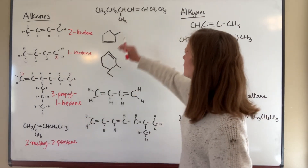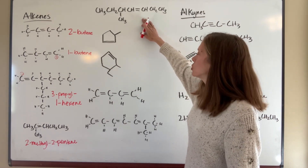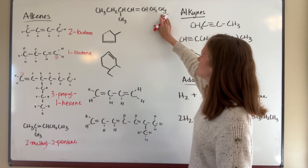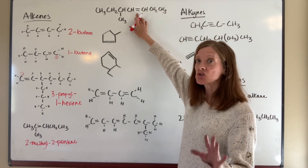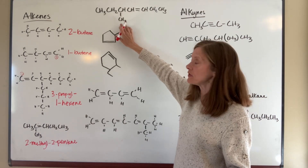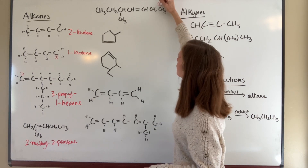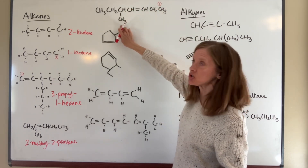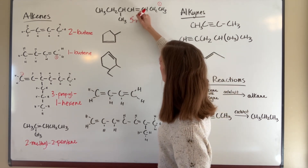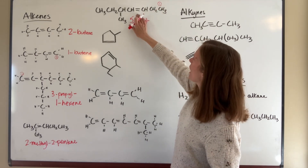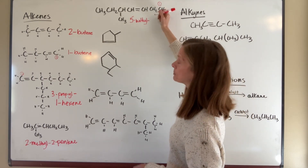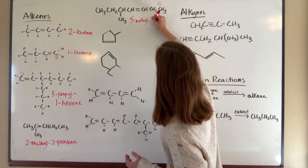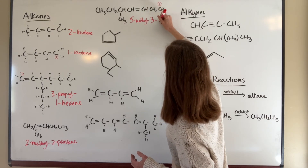In this example it appears there's a choice: start numbering from one end to give the methyl group the lowest number, or from the other end to give the double bond the lowest number. Since the double bond takes priority over alkyl groups, I must start numbering so the double bond gets the lower number. The substituent ends up on carbon five, and the double bond is on carbon three, giving 5-methyl-3-heptene.